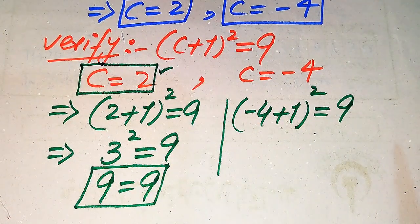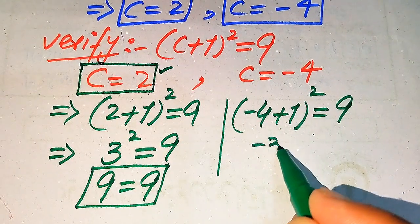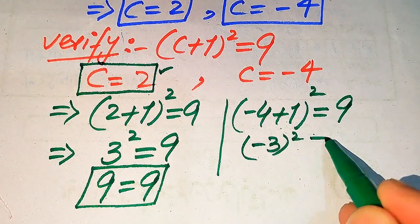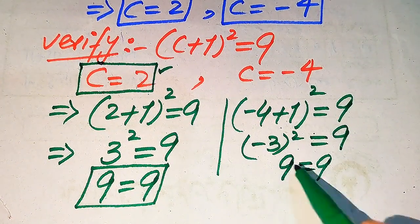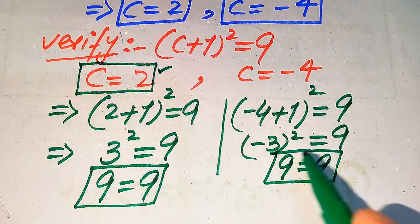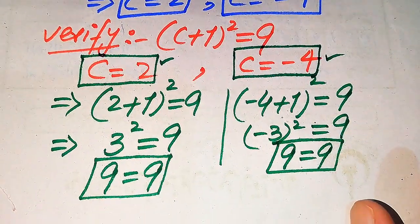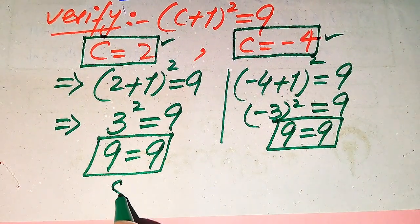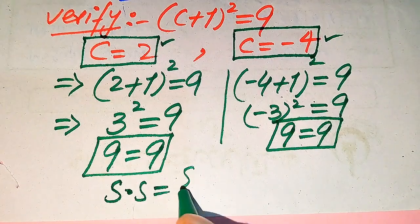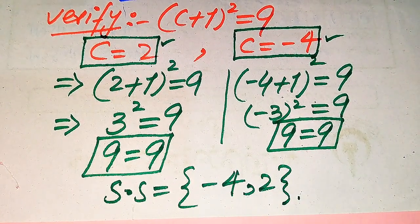3² equals 9, which equals 9 — this shows that c = 2 satisfies the given equation, so it is a solution. For c = −4: (−4 + 1)² = (−3)² = 9 = 9. This shows c = −4 also satisfies the equation, so it is also a solution. The solution set of the given equation is {−4, 2}.